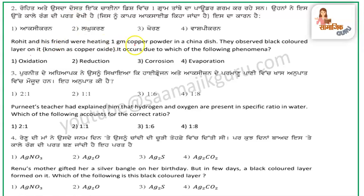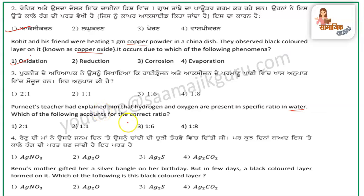The next question is: Rohit and his friend were heating 1 gram of copper powder in a china dish. It is explained that hydrogen and oxygen are present in a specific ratio in water. In H2O, hydrogen is 2 atoms and oxygen is 1 atom — that is the correct ratio.